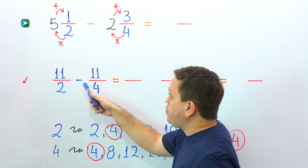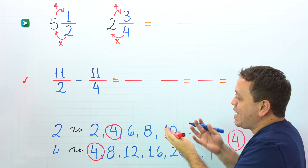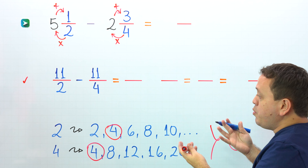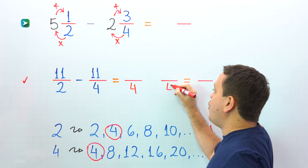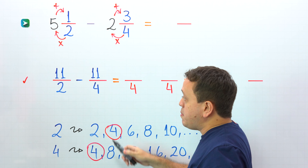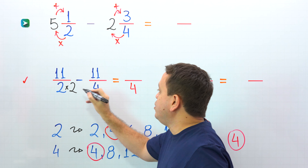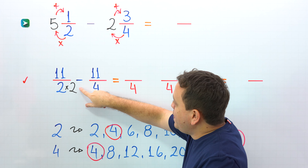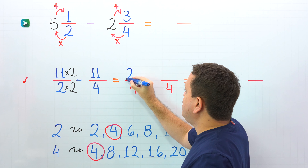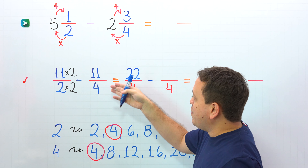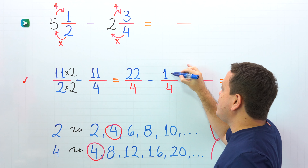Next, we need to subtract 11 halves minus 11 fourths. These two fractions have different denominators: 2 on the left, 4 on the right. We already know that the least common multiple of 2 and 4 is 4. So for each fraction, we need an equivalent fraction with a denominator of 4. Let's start with 11 halves. By what number should I multiply 2 to get 4? By 2, because 2 times 2 gives us 4. If we multiply by 2 on the bottom, we must multiply by 2 on the top, and 11 times 2 gives us 22. Then the minus sign, and for 11 fourths — this fraction already has a denominator of 4, so we don't need to readjust it. We just put the same fraction, 11 fourths.